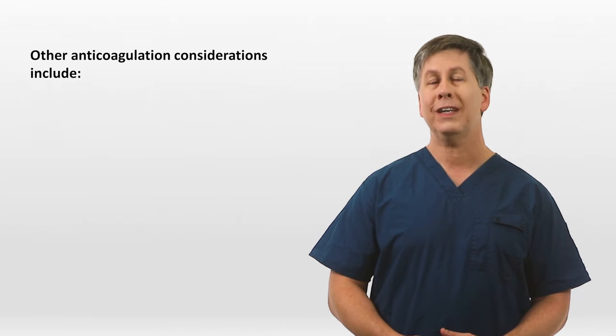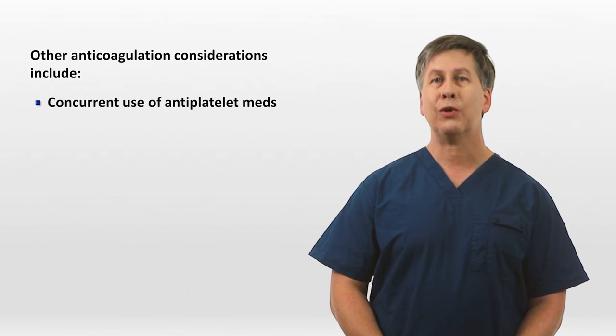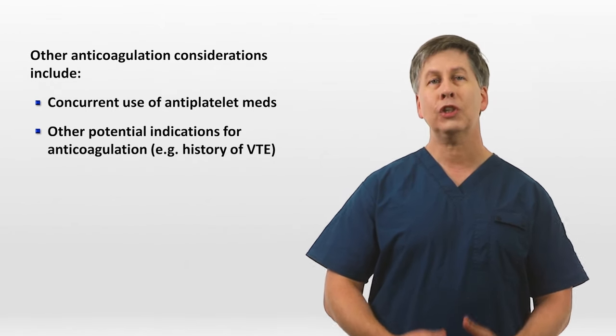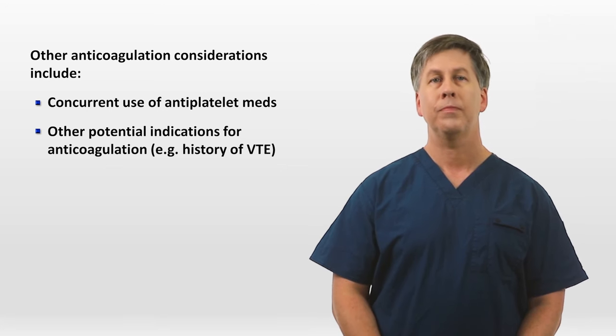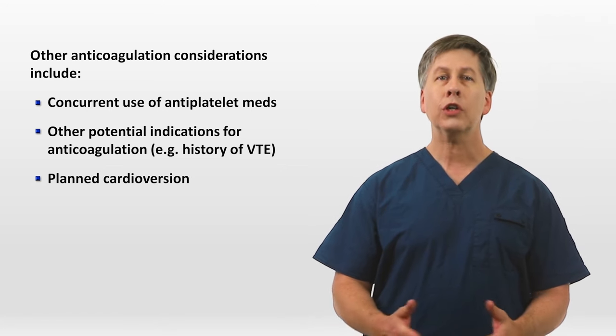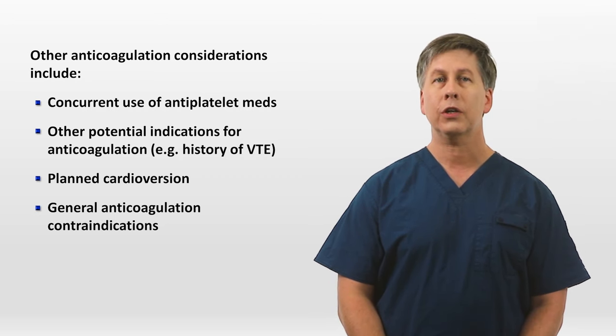Other factors to consider when making a decision about whether to initiate anticoagulation include the concurrent use of antiplatelet meds (which will increase bleeding risk), whether the patient has other potential indications for anticoagulation such as a history of venous thromboembolism, whether there is a planned cardioversion, and of course all general anticoagulation contraindications, such as recent surgery or a recent hemorrhagic stroke. When choosing a specific anticoagulant, a DOAC — also known as a NOAC, such as apixaban — is recommended over warfarin in all patients except those with mechanical heart valves or moderate to severe mitral stenosis, who should be on warfarin. Patients with end-stage renal disease should be treated with either warfarin or apixaban specifically. For acutely ill inpatients, it may be necessary to use heparin in the short term if they may need to come on and off anticoagulation for procedures.